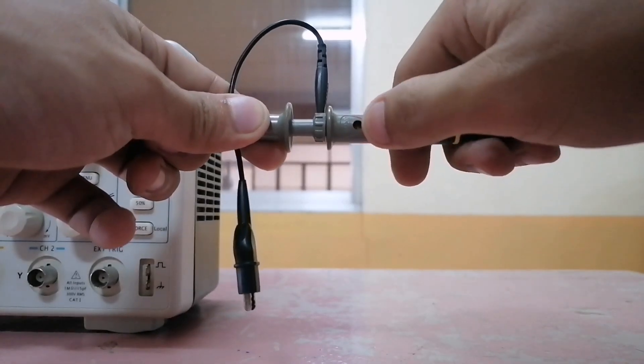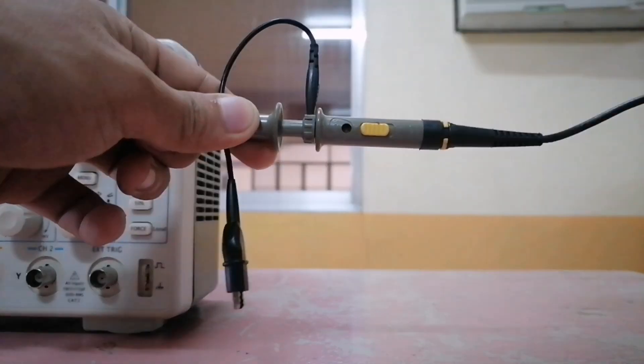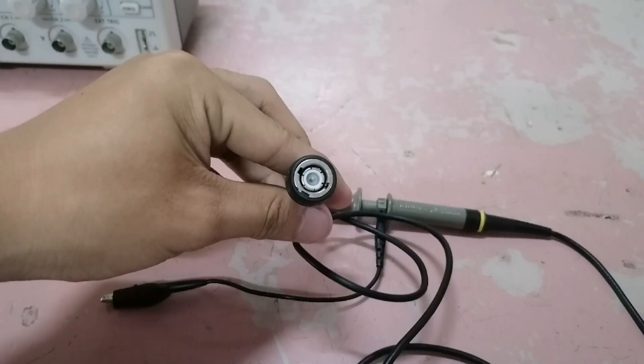For our application, we will be using 10x. On the top of the switch, we have the built-in capacitor, which is used to calibrate the probe. Finally, at the end of the probe is the BNC connector, which is used to connect to our scope.